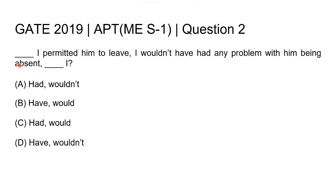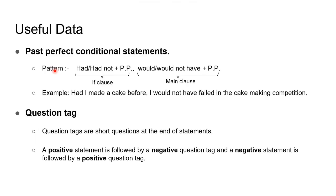The first two parts make a statement called a conditional statement. The past perfect form of the verb 'permit,' used here as 'permitted,' shows us that this is a past perfect conditional statement. The last part is a question tag. This is the useful data for this question.